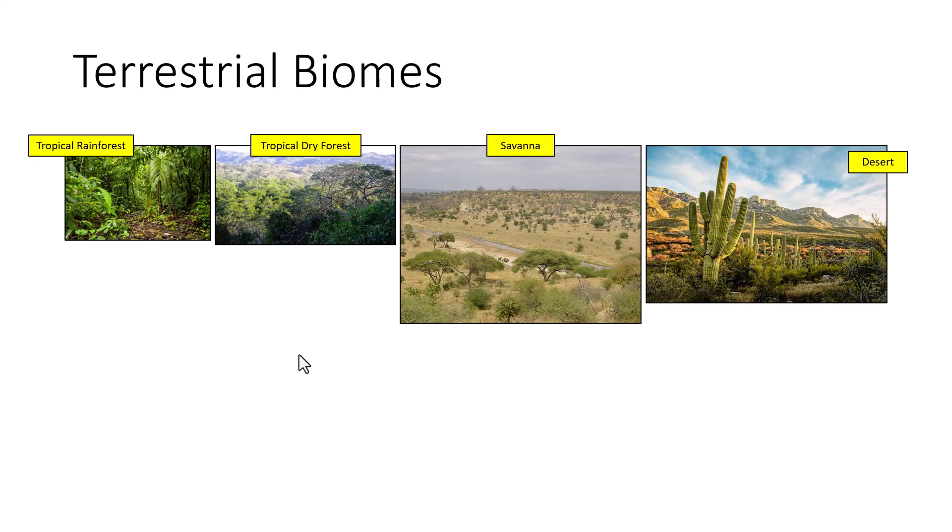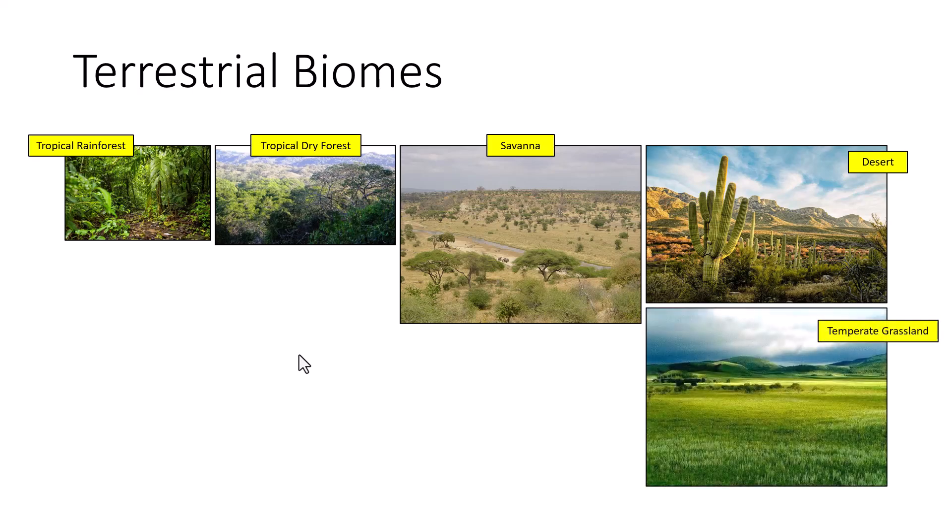Temperate grassland is indicative of where we live in Kansas — plains and prairies with really fertile soils that give rise to good cropland. Abiotic factors include warm to hot summers, cold winters, and moderately seasonal precipitation — enough rain to keep it green. We have good fertile soil and occasional fires from controlled burnings or natural fires, but fewer fires than the savannah.